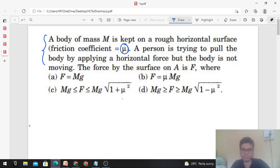The force by the surface on A is F. So this is the body of mass M, and a person is trying to pull this body in the horizontal direction by applying some force which is not given in magnitude. So let's assume it will apply F1 force.